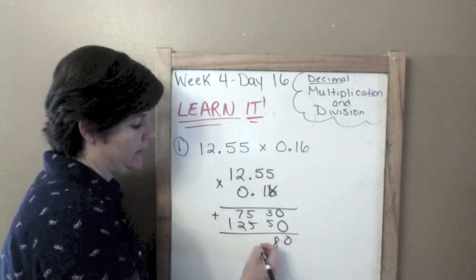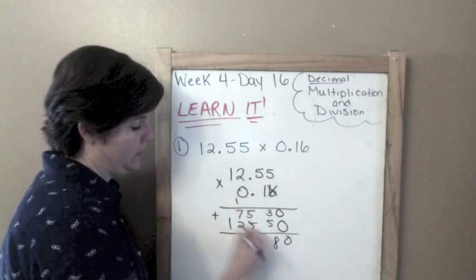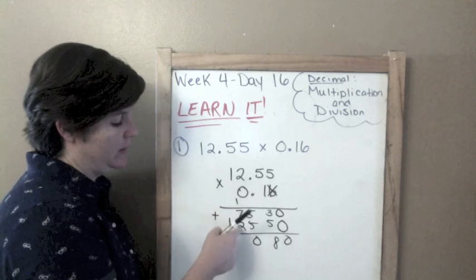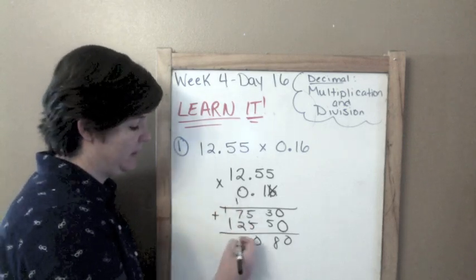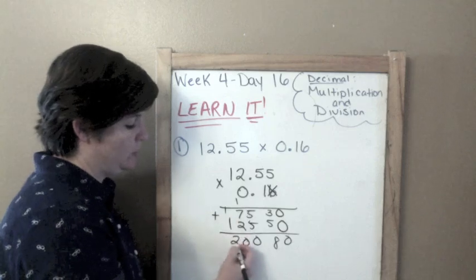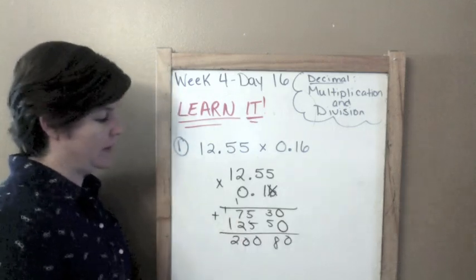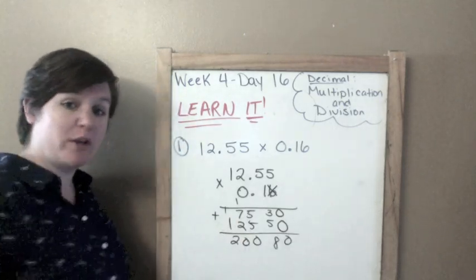1 times 5 is 5. 1 times 5 is 5. 1 times 2 is 2, and 1 times 1 is 1. Add up those digits. 0, 8, 10. Don't forget to get that one. 1 plus 7 is 8. 8 plus 2 is 10. So, we have 2. There. So, now, this is where we plug in our decimal.